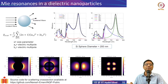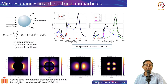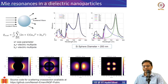This is the same Mie theory; we just replace the dielectric constant of a metal with a high-index semiconductor like silicon or gallium arsenide to get these curves. The size of the nanoparticle is quite large — for example, the silicon sphere diameter here is about 200 nm, whereas plasmonic resonances occur at 50–100 nm. Larger diameters cause a red shift of the resonance.